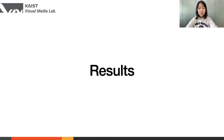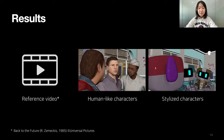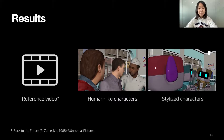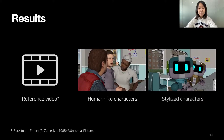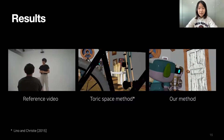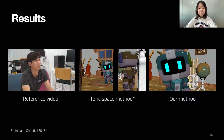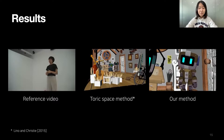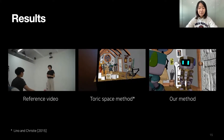Here are some results. These are results generated using the same reference clip but on different character types. It shows that our method works well with both human-like characters as well as stylized characters. We also compared our results with the camera layout generated by the previous method. While the previous method better follows the on-screen head composition, our method better follows the framing type of the reference video.